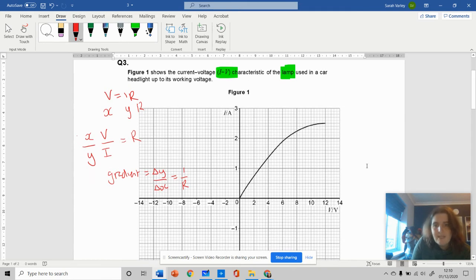Resistance is one over the gradient. As the gradient is getting shallower, the resistance is increasing. I'm preparing myself to deal with something to do with resistance and IV characteristics, because they normally want to talk about the resistance of the graph.